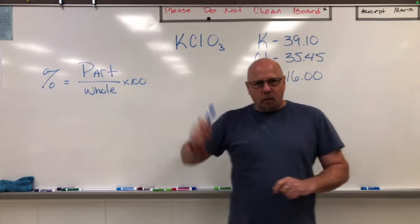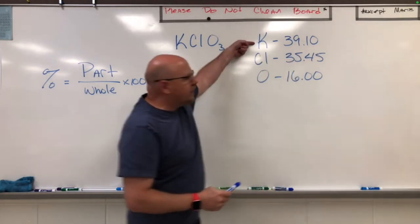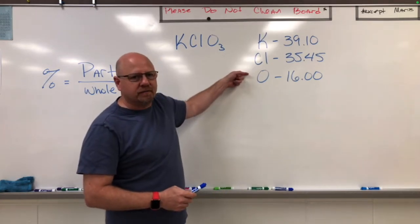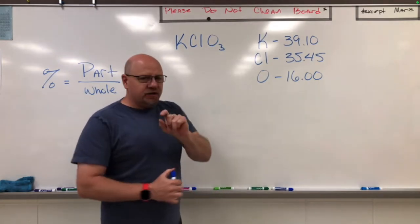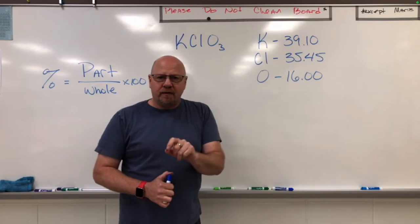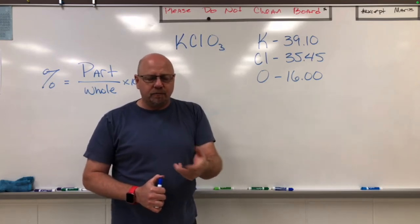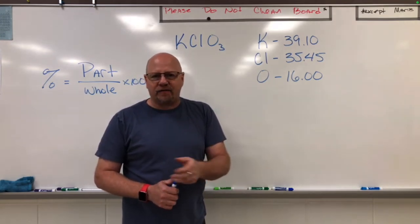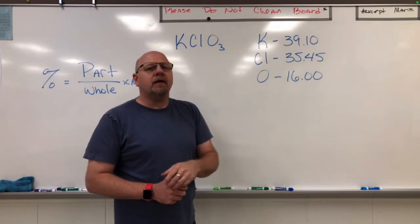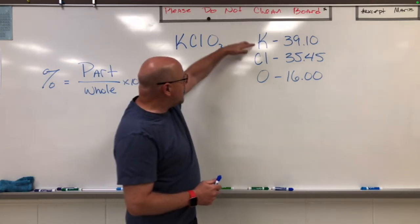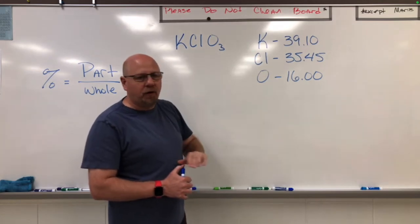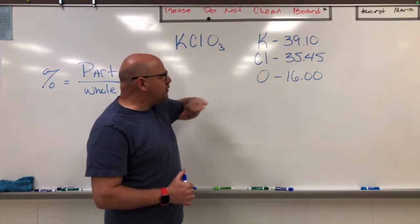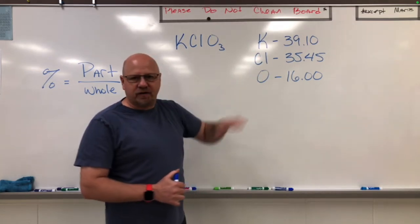In potassium chlorate we have the three elements potassium, chlorine, and oxygen. Now each of those elements, if we look at the periodic table, they have a mass associated with them. We'll learn more about what that mass is in detail, but for right now a potassium atom is going to have a mass of 39.1, chlorine 35.45, and oxygen 16.